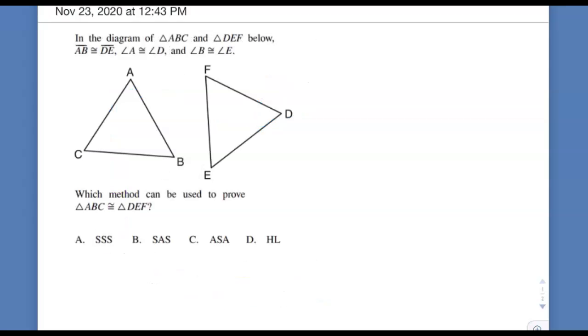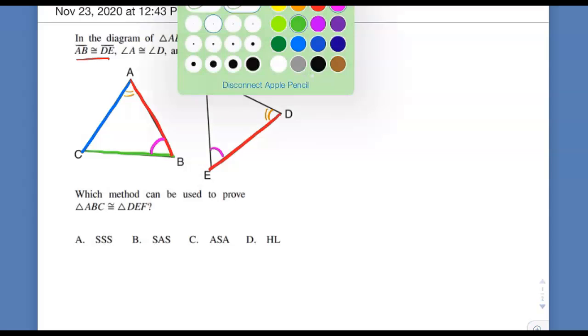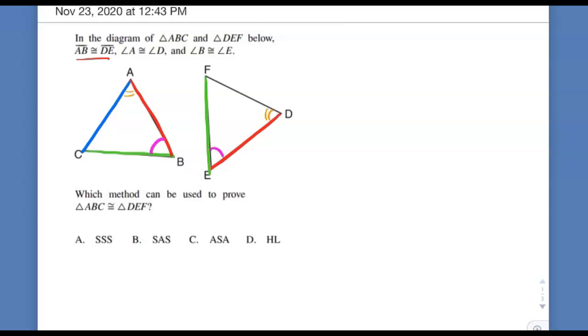What made this problem tricky was they almost look like equilateral triangles, but we can't assume that. So if we have triangle ABC over here, and I made those particular colors for a reason, it says that AB is the same as DE. So AB and DE are the same - I'm going to make those both red. Then it says angle A is the same as angle D, and angle B is the same as angle E.